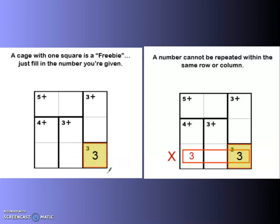Exactly like Sudoku, you cannot repeat a number within a row or a column. So now that I've put 3 in here, I cannot put a 3 in either this one or this one. And that's how we build the game.